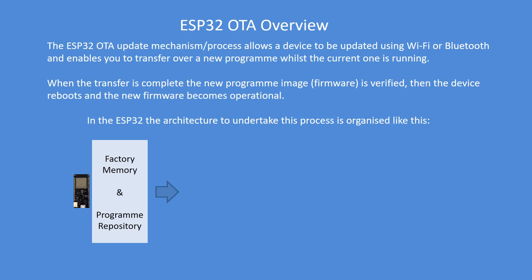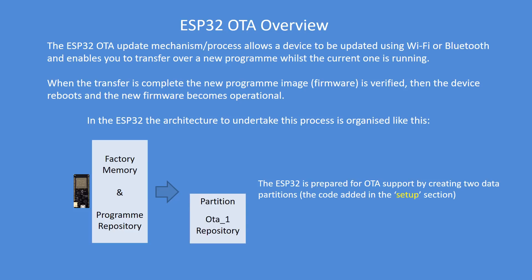I'm going to cover Wi-Fi over-the-air updates. When the image is transferred it gets verified, and then the device reboots and your new code becomes operational. The ESP32 is prepared for over-the-air updating by augmenting your setup, which creates two partitions — OTA1 and OTA2. I'll show in a second how that operates.